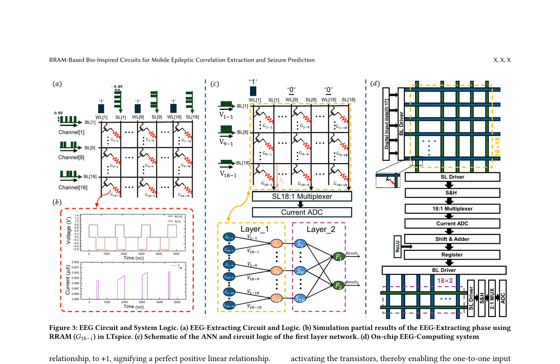The authors propose a resistive random access memory (RRAM) based bio-inspired circuit for mobile epileptic correlation extraction and seizure prediction. This circuit extracts EEG correlation features and predicts seizures using a two-layer neural network. The first layer is directly implemented on the EEG extracting circuits, while the second layer is mapped onto the RRAM chip with specific rules. The EEG extracting circuit utilizes an 18 by 18 array of memristors, each recording the cumulative overlap correlation values between pairs of EEG channels. The correlation magnitudes of the 18 EEG channels are mapped to the sizes of the 18 by 18 conductance values within the array. The memristors are programmed using a pulse-based scheme, where a greater overlap in the pulse signals at both ends of the memristors signifies a larger conductance change, indicating stronger signal correlation.